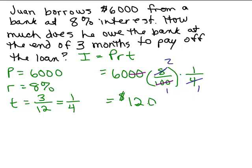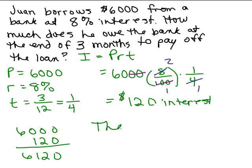So at the end of 3 months, he only owes $120 in interest. Be careful. So it's $120 in interest. But the question is, how much does he owe the bank? So he owes the $6,000 plus the $120 in interest. So you could say the payoff is $6,120.